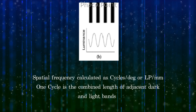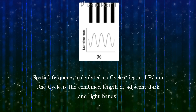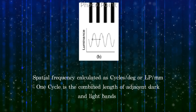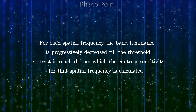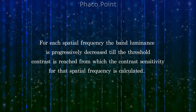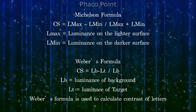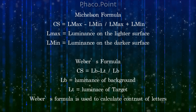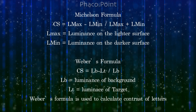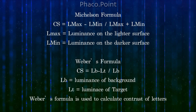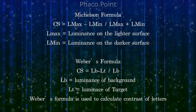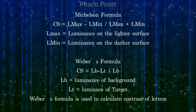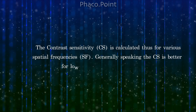Spatial frequency is calculated as cycles per degree or line pairs per millimeter. One cycle is the combined length of adjacent dark and light bands. For each spatial frequency, the band luminance is progressively decreased until the threshold contrast is reached, from which the contrast sensitivity for that spatial frequency is calculated. Michelson's formula gives contrast sensitivity as (L_max − L_min) / (L_max + L_min), where L_max is luminance on the lighter surface and L_min on the darker. Weber's formula states contrast sensitivity equals (LB − L) / LB, where LB is background luminance and L is target luminance, and is used to find the contrast sensitivity of letters.